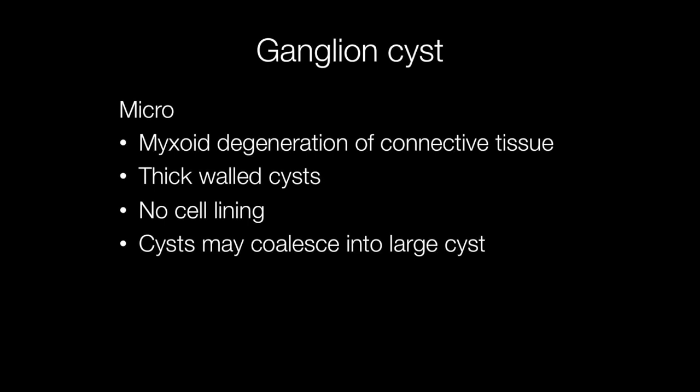Histologically there are three main features. One is areas of myxoid degeneration of connective tissue. Another is the presence of thick-walled cysts. The other feature is that these cysts are devoid of a cell lining. There may be multiple cysts and these may eventually coalesce into a large cyst.